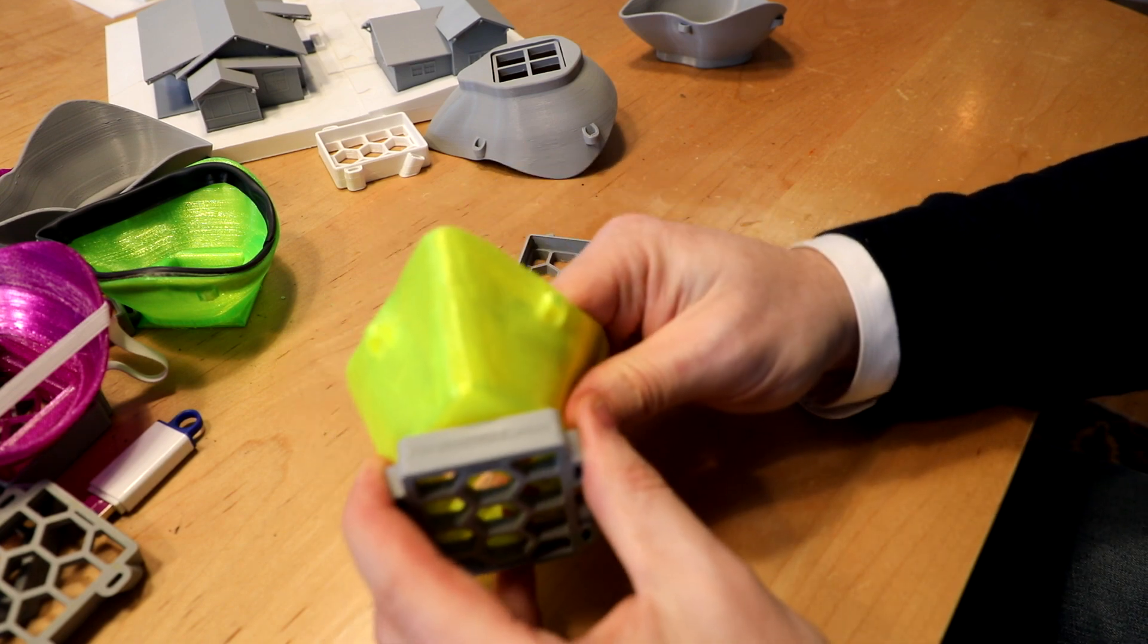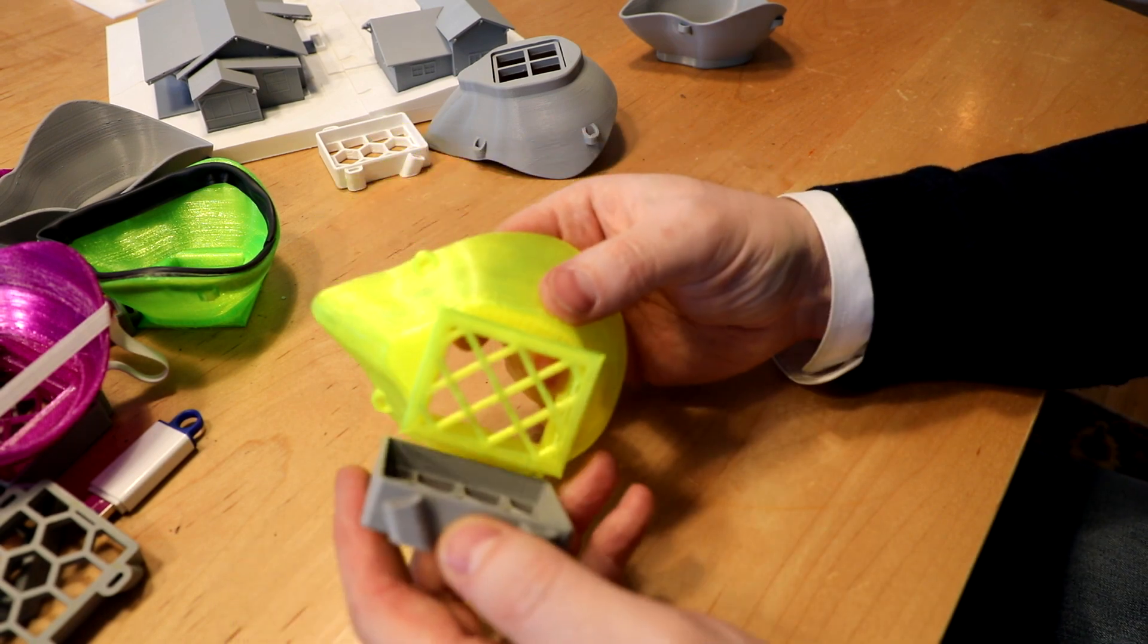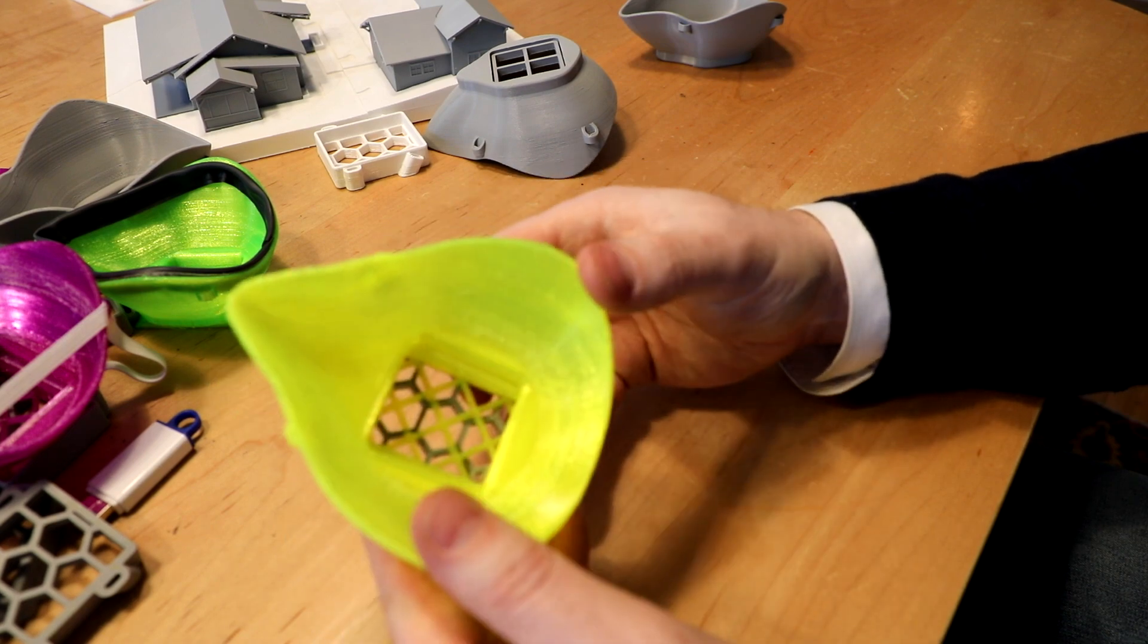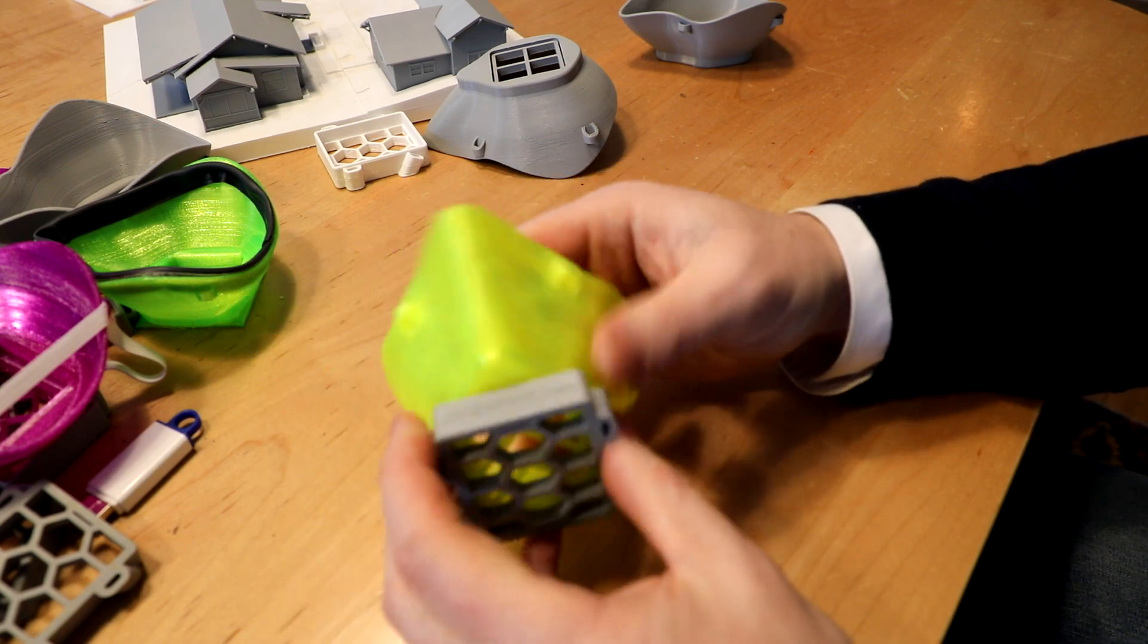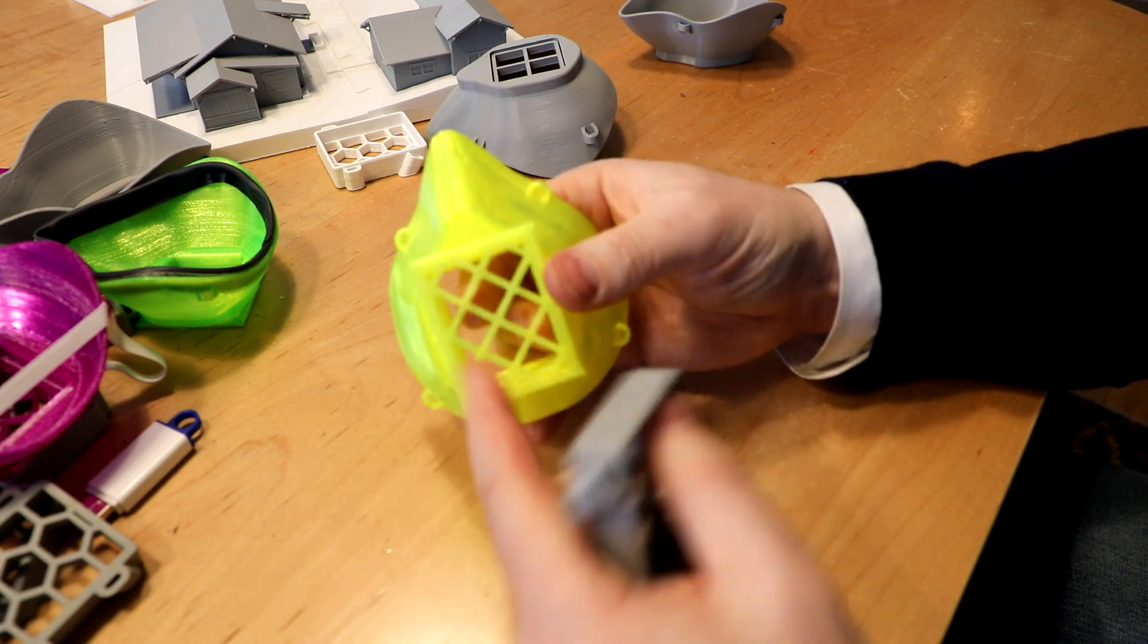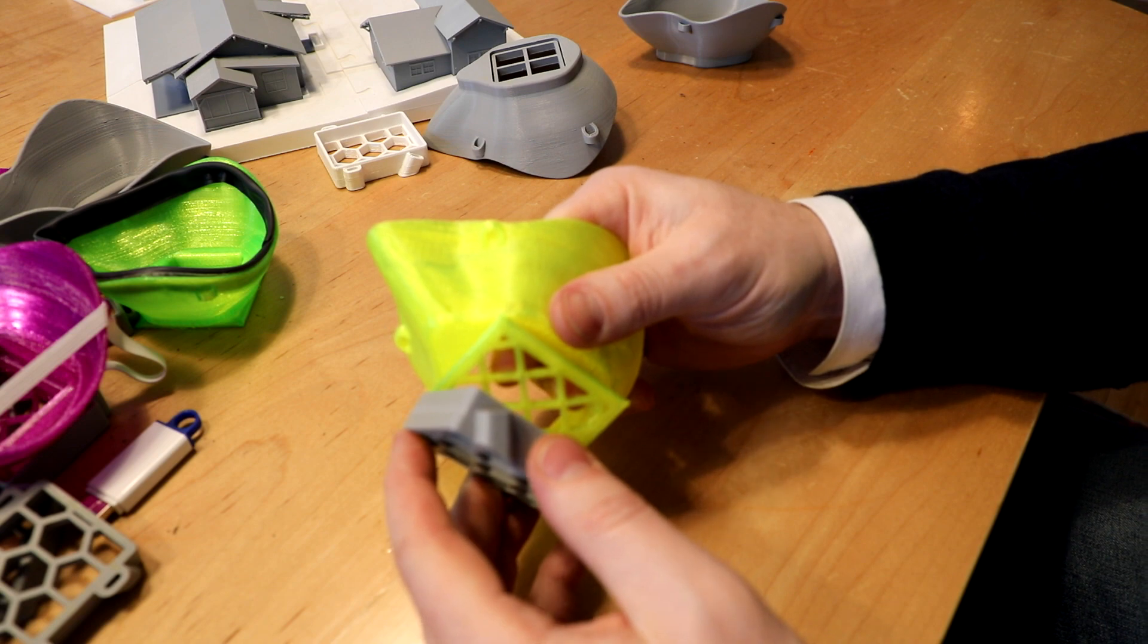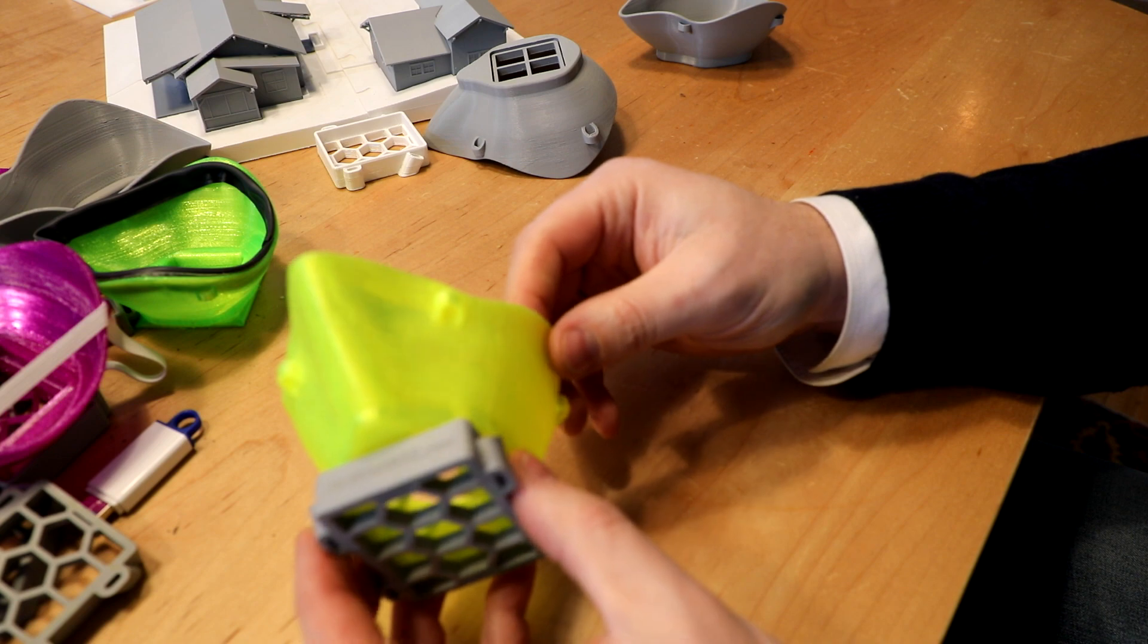The other idea that we had for this removable filter material is if you run out of N95 filter material, you could use a towel, you could use T-shirts, you could put Kleenex in there, really anything you wanted to. That wouldn't necessarily give you the filtration that you needed, but it'd be better than not having anything at all.